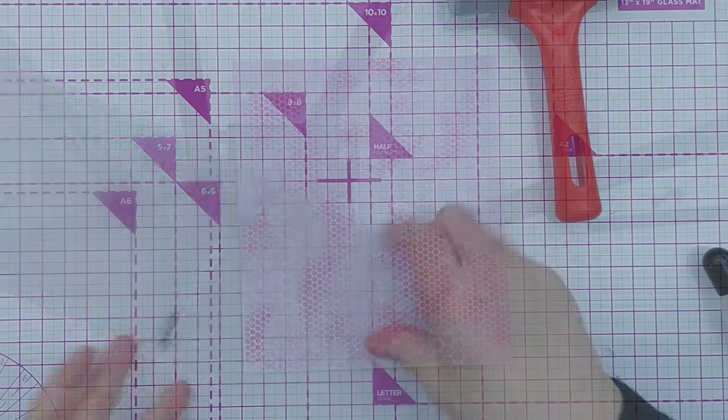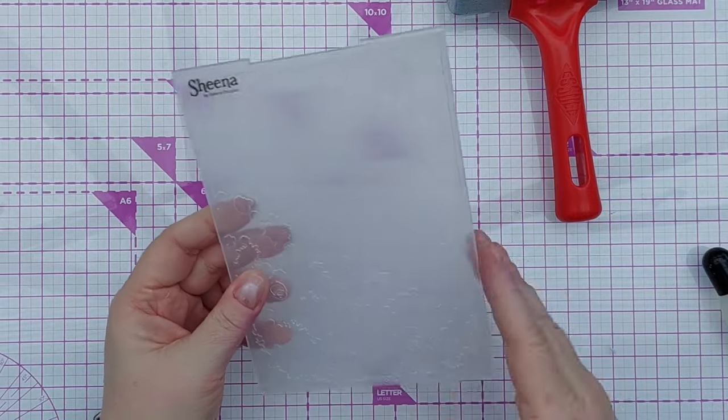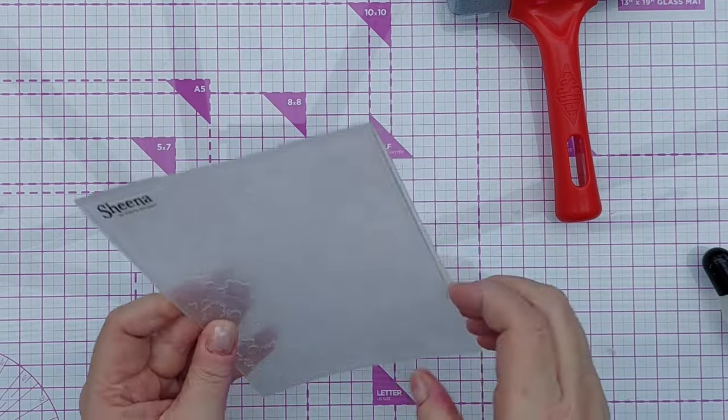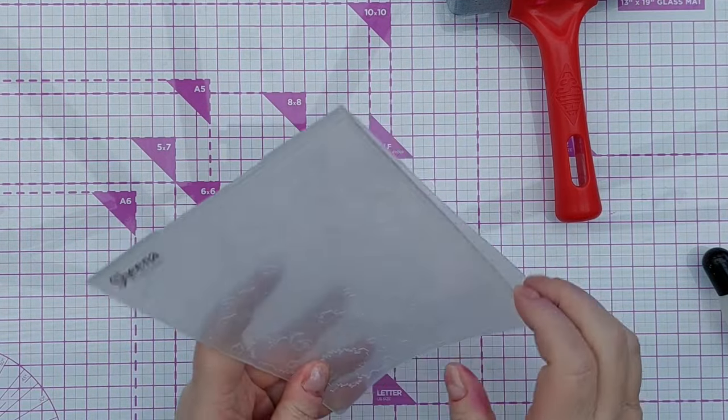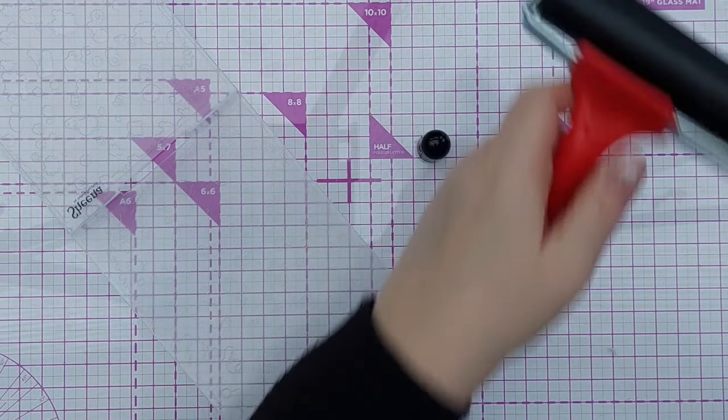I've got an embossing folder here that has got a kind of blotchy pattern on it, almost paint splats which is quite fun. It's by Sheena Douglas apparently, this was a charity shop find. And I'm going to add some embossing into it.